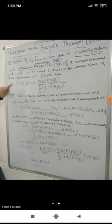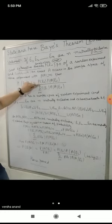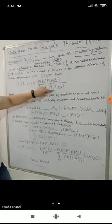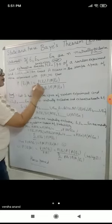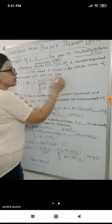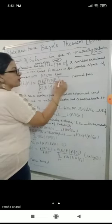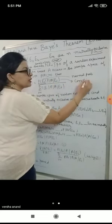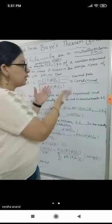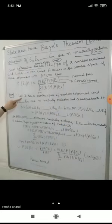So, probability of Ei — where i goes from 1 to N — is the normal probability, and probability of A over Ei is the conditional probability. Now what is probability of A over Ei? This is called the conditional probability.